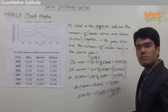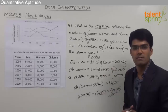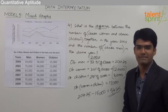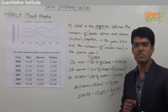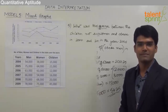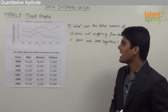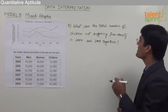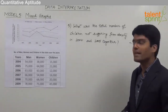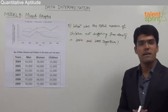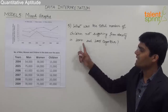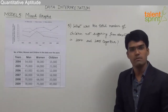This question is purely based on calculation ability. The faster you do your calculations, the quicker you get your answer, so practice on calculations to solve such questions as quickly as possible. The last question from this data is: what was the total number of children not suffering from obesity in 2004 and 2005 together?